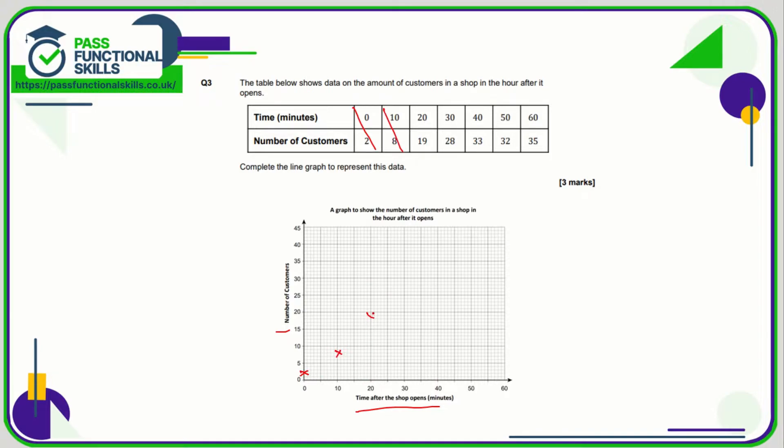30, 28 - so across to 30, up to 28. 40, 33 - across to 40, up to 33. 50, 32 - across to 50, up to 32, there's 30, 31, 32. And across to 60, up to 35, there we go.